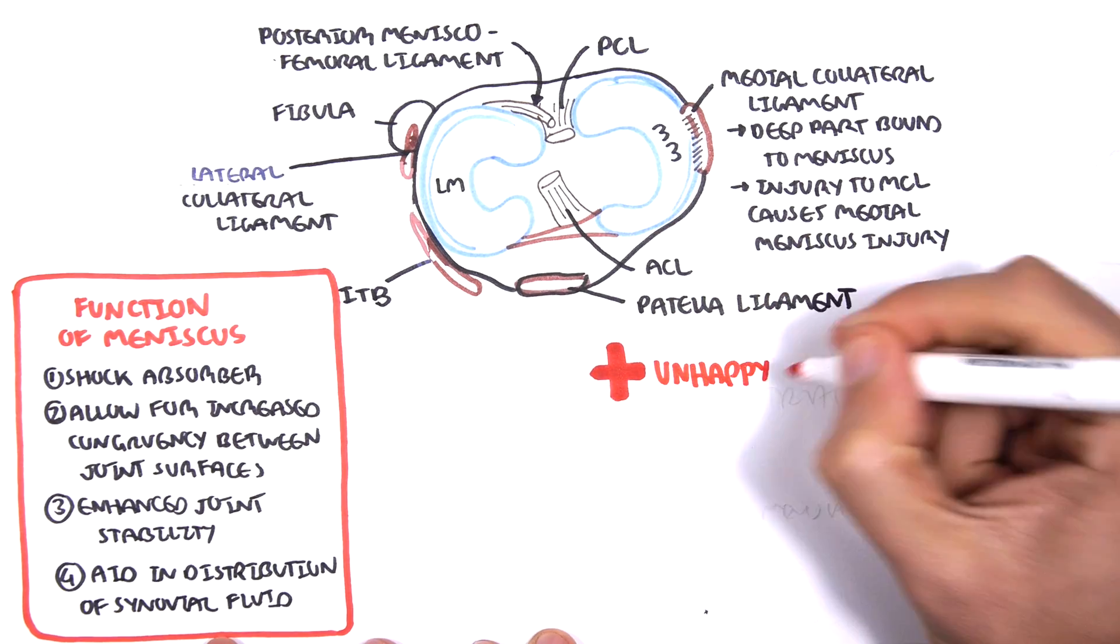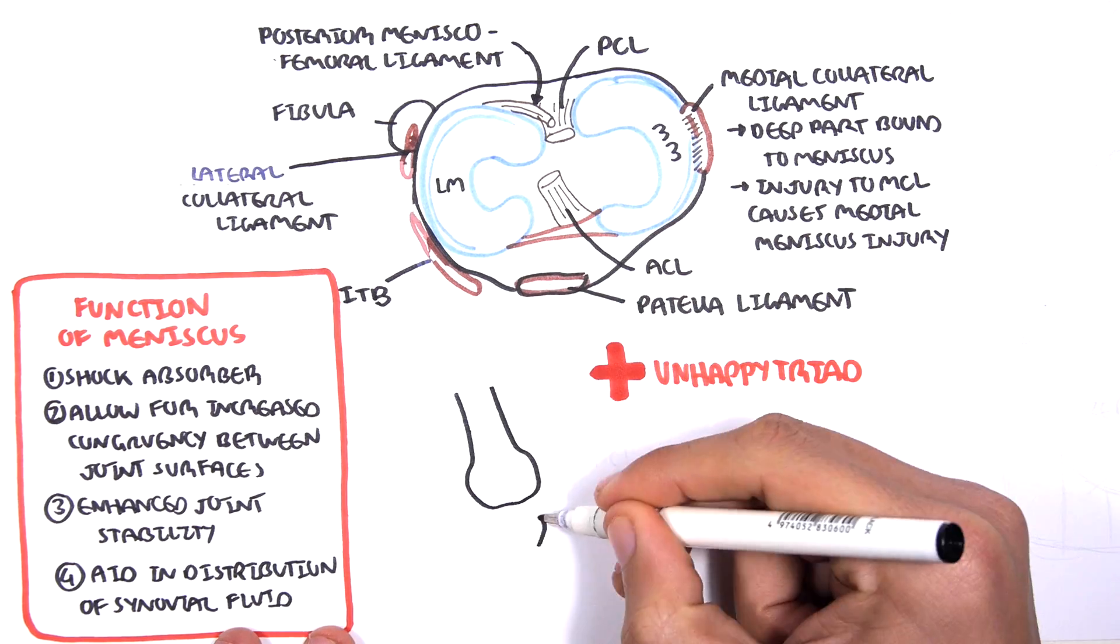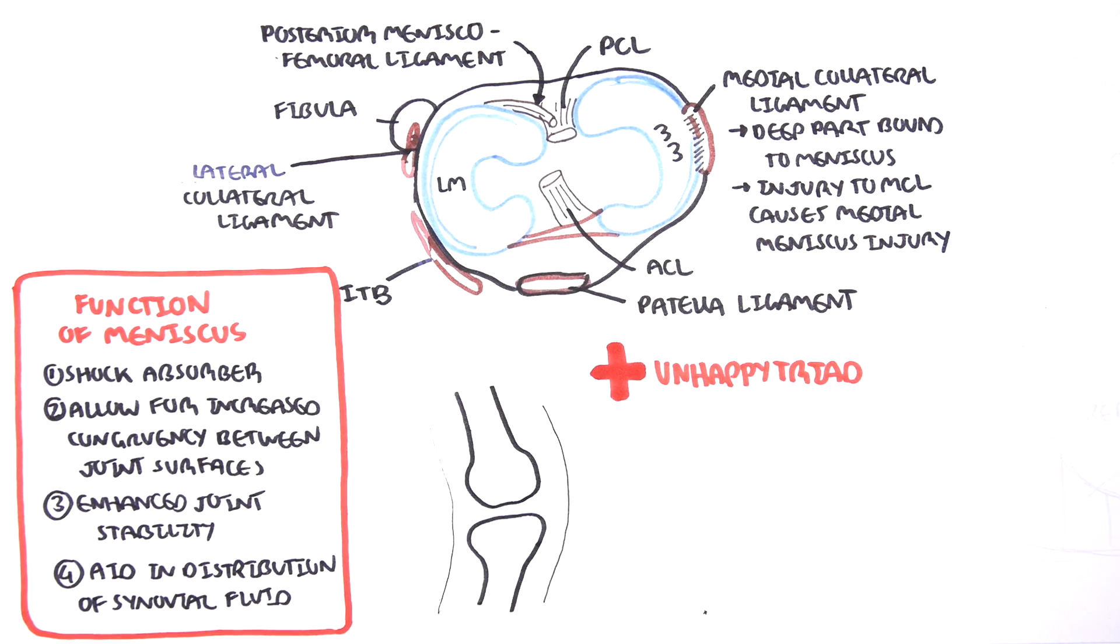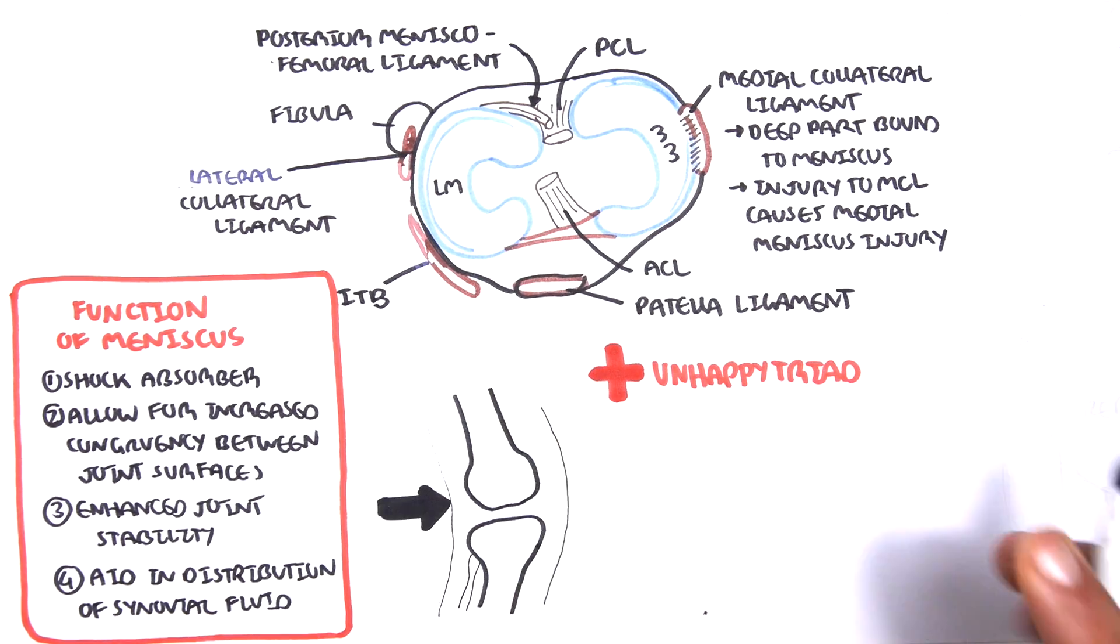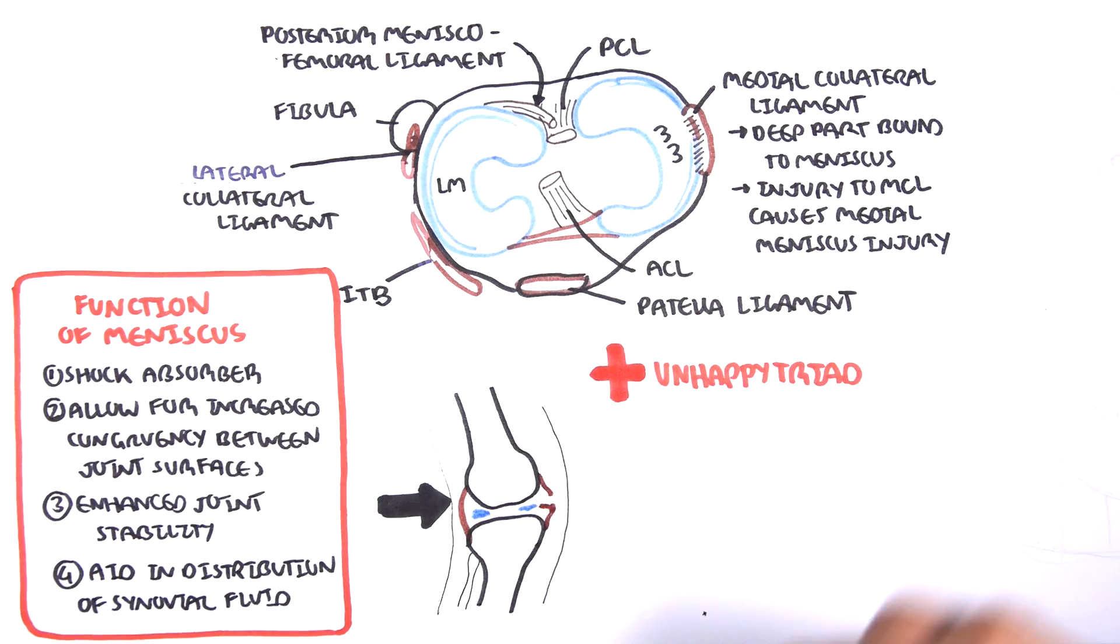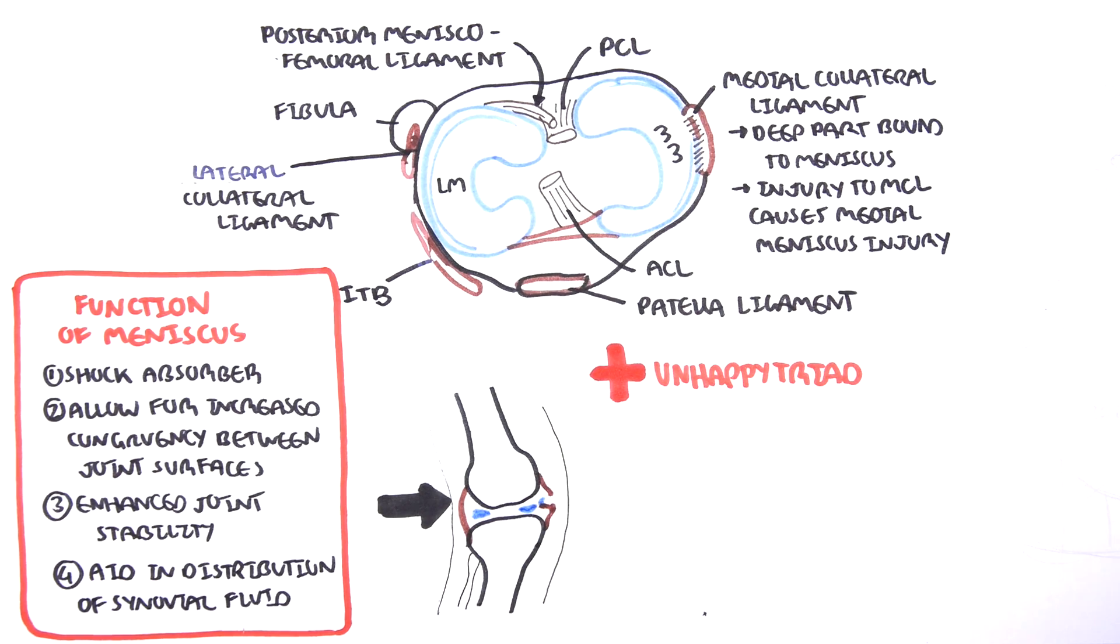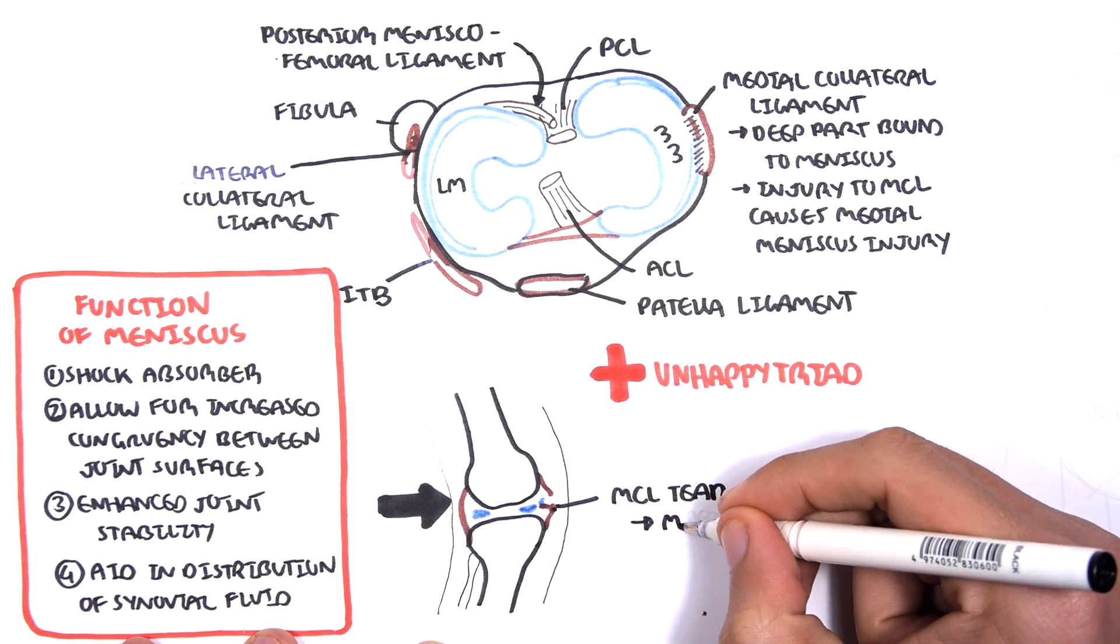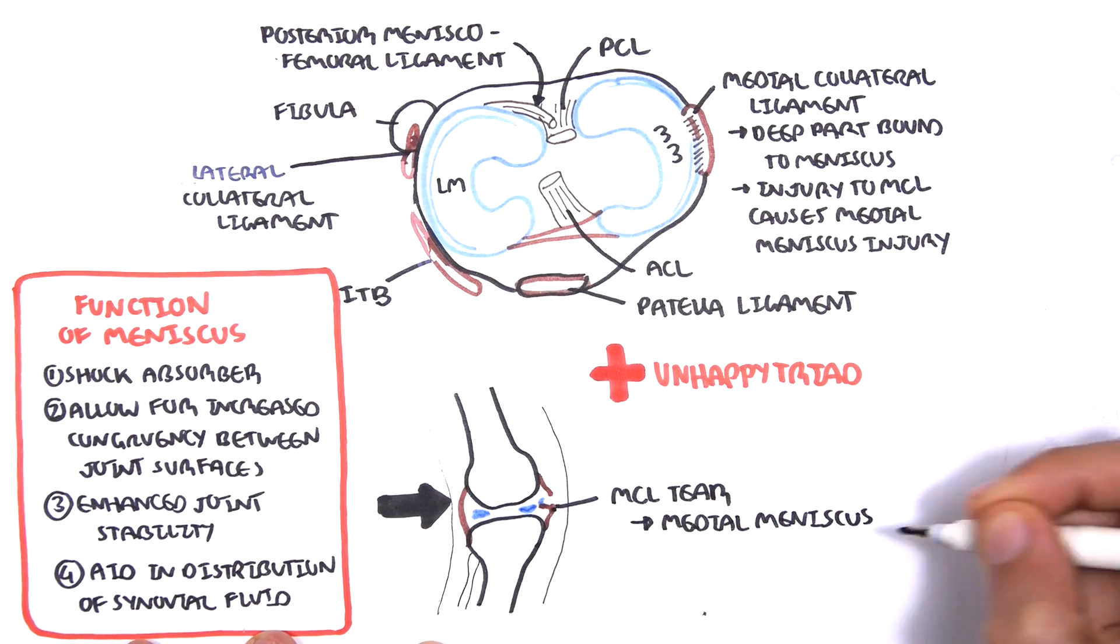Clinical significance. There is something called the unhappy triad, or the O'Donoghue triad. And this is a serious injury coming from the lateral part of the knee joint with the knee twisting. And this can cause what is known as the unhappy triad.